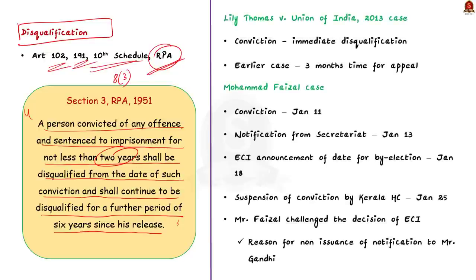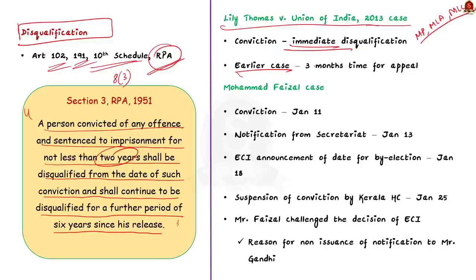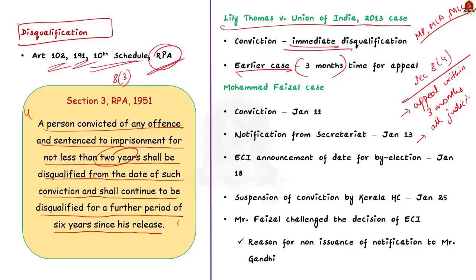They are saying this based on the Lily Thomas case. In the Lily Thomas v. Union of India 2013 case, the Supreme Court said that MPs, MLAs, or MLCs — if they are convicted of a crime and given a minimum of two-year imprisonment, they will lose their membership of the house with immediate effect. Before this case, under Section 8.4 of the RPA Act 1951, the convicted legislator had three months' time to appeal their conviction, during which the disqualification would be on hold until all judicial remedies in lower courts, high courts, and the Supreme Court were exhausted. But the Lily Thomas case struck down Section 8.4 — now, if a person is convicted for an offence with more than two years of imprisonment, that person should be immediately disqualified.